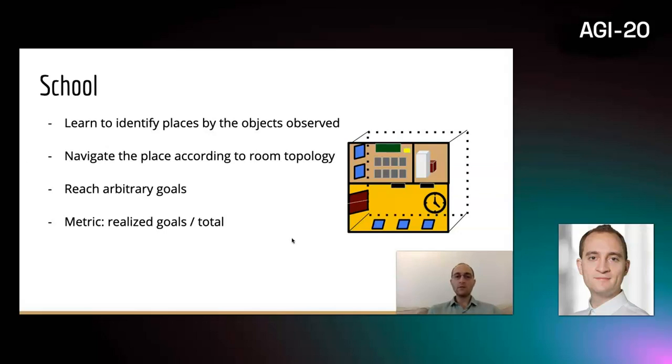Another example is a school, where there are different objects and the rooms can be navigated. We expect the system to be able to do this and reach different goals in this environment. We can define a metric like the realized goals over the total goals to measure how well the system performs.